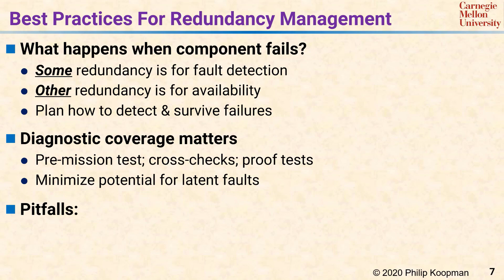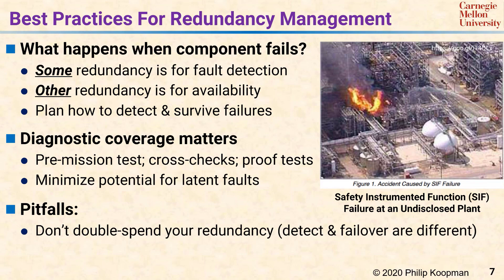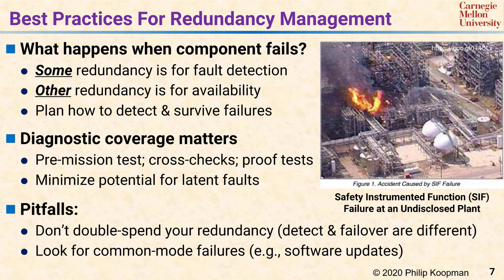The biggest pitfall is that if you get redundancy wrong, you can have a safety-critical system failure such as the accident shown here. Make sure you do not double-spend your redundancy: first spend redundancy on detection, then spend more on failover if you need it. Trying something fancy typically doesn't work—you need to be extremely careful if you try to cut corners or be clever about redundancy. Also, don't forget to look for common-mode failures such as software updates that could compromise multiple channels of your system at the same time.